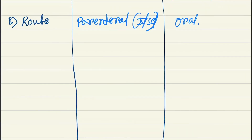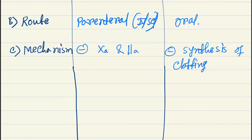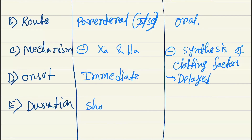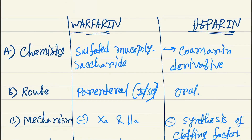Regarding mechanism: heparin inhibits factor 10a and 2a, and warfarin inhibits the synthesis of clotting factors. Regarding onset: heparin has an immediate onset, and warfarin has a delayed onset. Regarding duration: heparin has a shorter duration of 4 to 6 hours, and warfarin has a longer duration of 3 to 6 days.